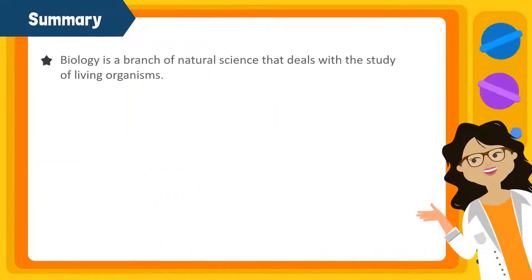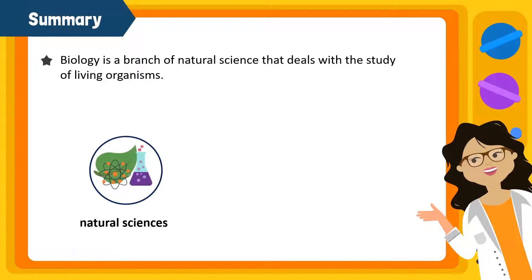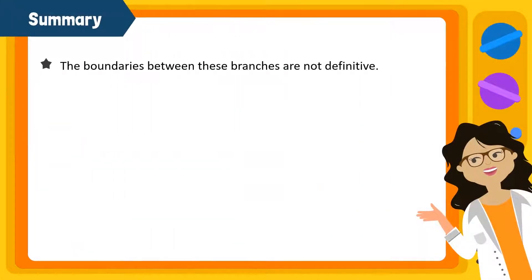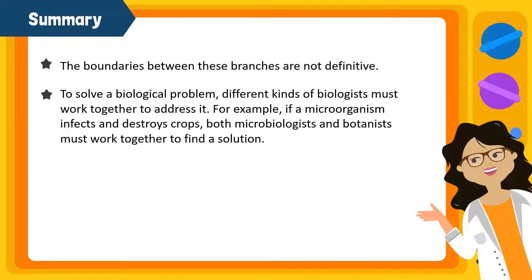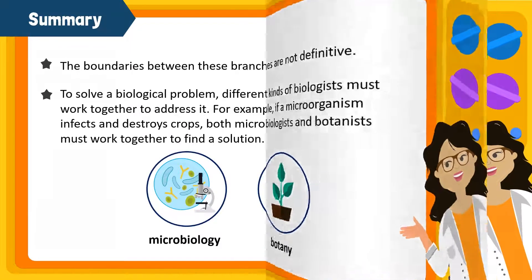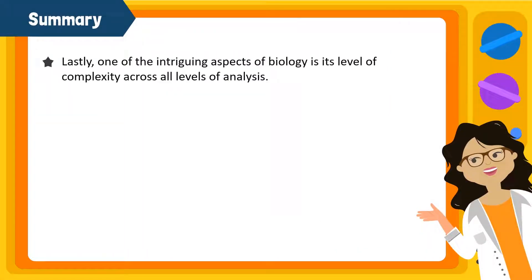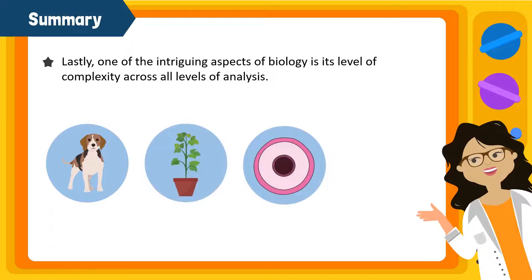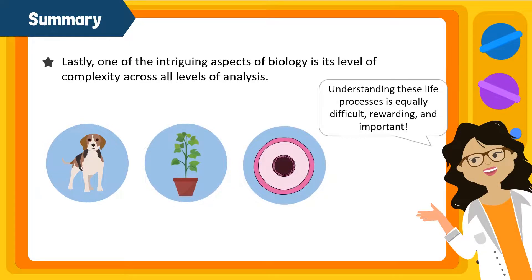In this video, we learned that biology is a branch of natural science that deals with the study of living organisms. There are numerous branches of biology, but each branch deals with understanding different aspects of living organisms. The boundaries between these branches are not definitive. To solve a biological problem, different kinds of biologists must work together to address it. For example, if a microorganism infects insects and destroys crops, both microbiologists and botanists must work together to find a solution. Lastly, one of the intriguing aspects of biology is its level of complexity across all levels of analysis. You may have noticed that we can observe animals or plants as communities, or we can look at individual cells. Nevertheless, understanding these life processes is equally difficult, rewarding, and important.